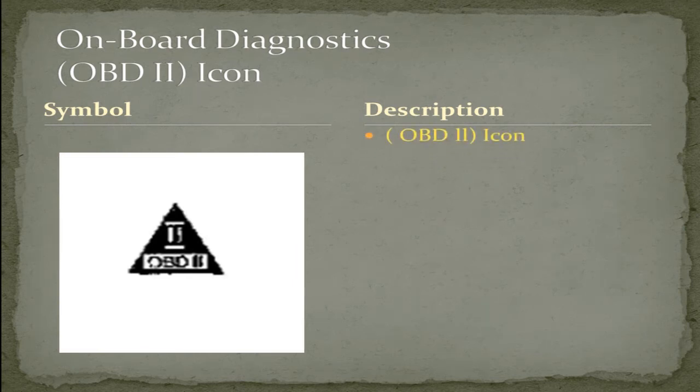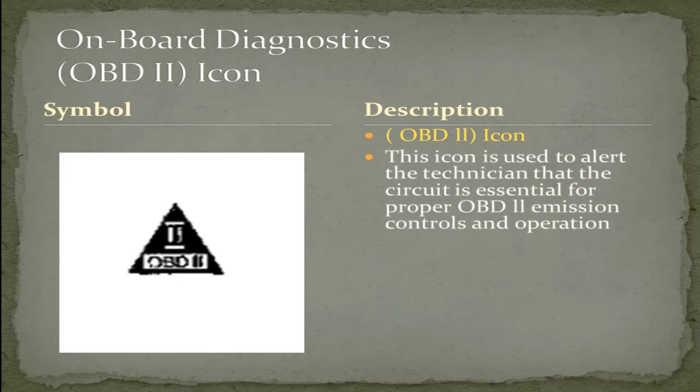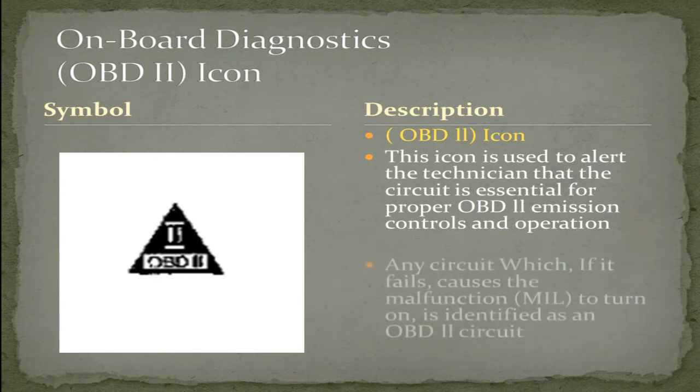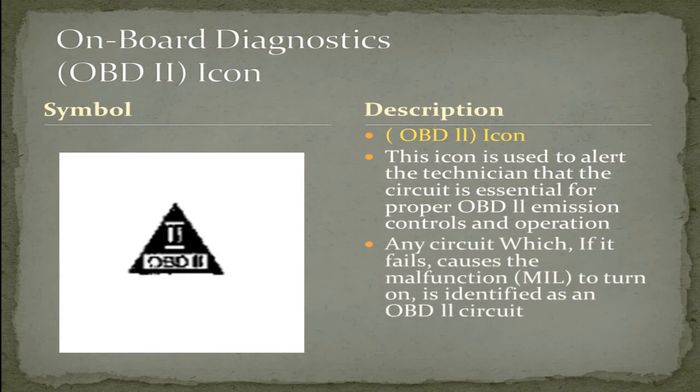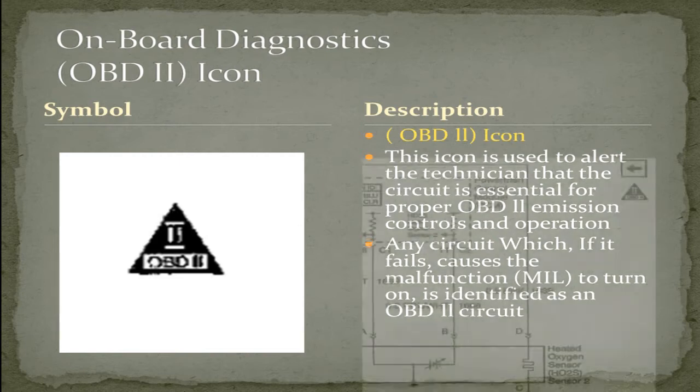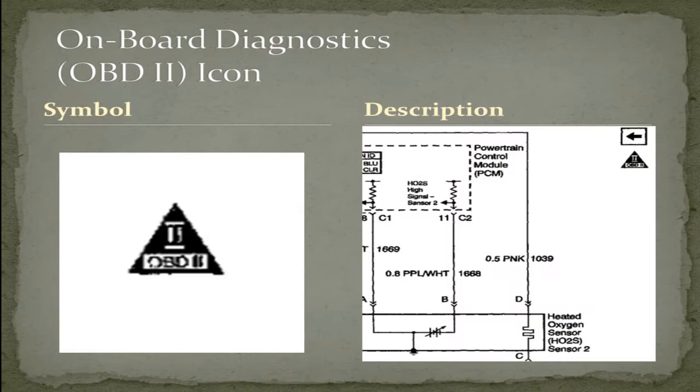On Board Diagnostics (OBD-II) icon. This icon is used to alert the technician that the circuit is essential for proper OBD-II emission controls and operation. Any circuit which, if it fails, causes the malfunction indicator lamp to turn on is identified as an OBD-II circuit. As illustrated here in a snapshot of the power control module (PCM) and the heated oxygen sensor.